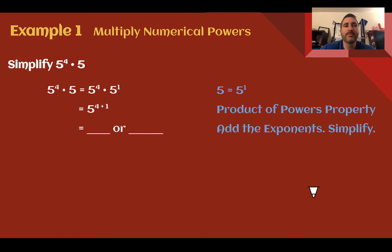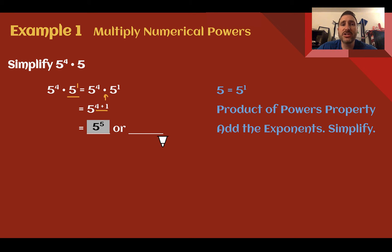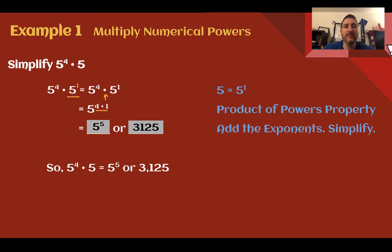Example 1: Multiply numerical powers. Simplify 5 to the fourth times 5. So 5 to the fourth times 5 is really the same as 5 to the fourth times 5 to the first power. You're rarely going to see an exponent of 1, so if you see a number without an exponent, just know that it is a hidden exponent of 1. Now that we have the same base, we add the exponents: 4 plus 1 gives us 5 to the fifth power. If we multiply it out, 5 to the fifth is 3,125.